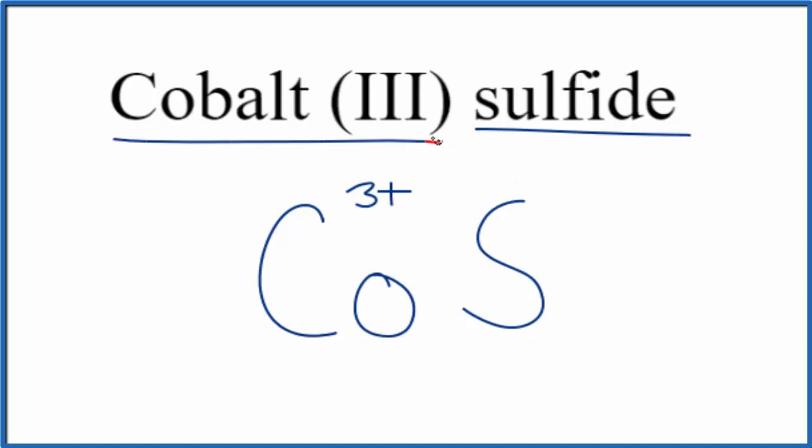Since we have this metal here and then this nonmetal, we're going to consider this an ionic compound, and we need to take charge into account. So, we have our cobalt-3-sulfur. If we look sulfur up on the periodic table, it forms ions with a 2-minus ionic charge. This is the sulfide ion.